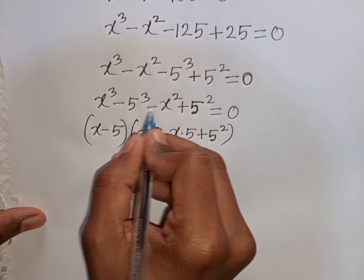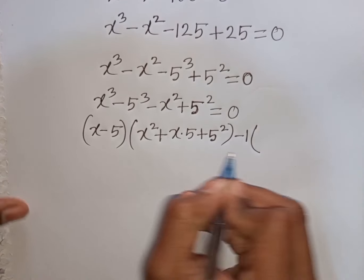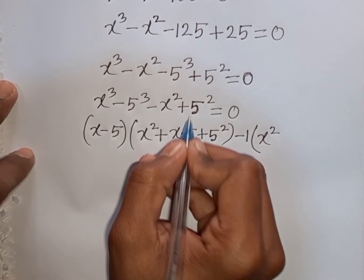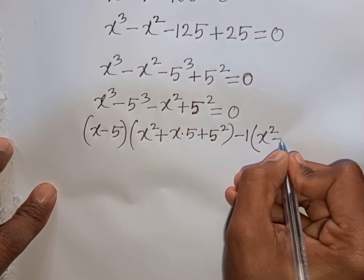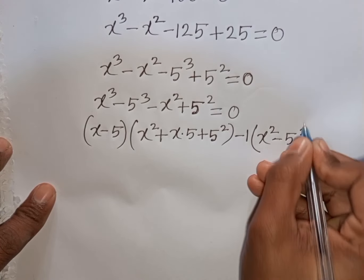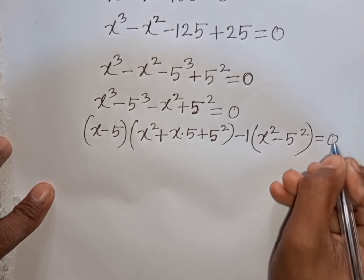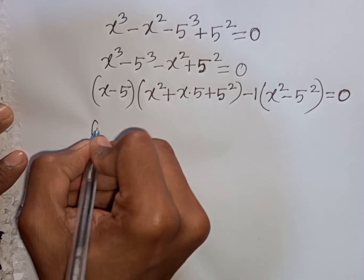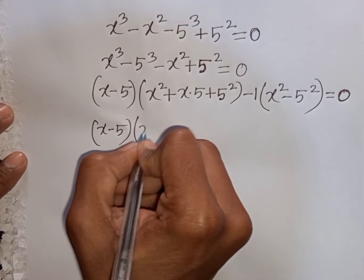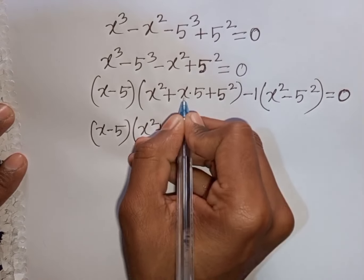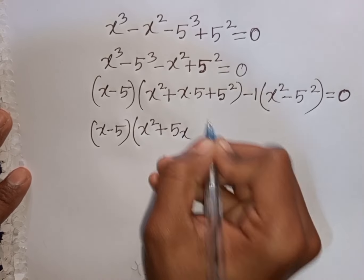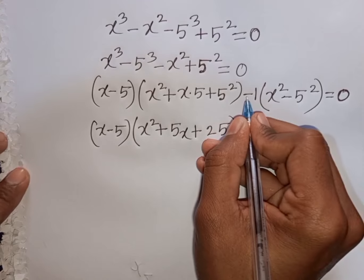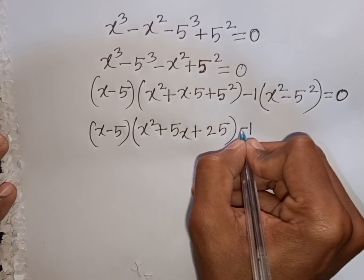Then from here I take common minus 1, so minus 1 is out of the bracket. This divided by this means x square, then plus 5 square divided by minus 1, that means it will be minus 5 square, then bracket close is equal to 0. Now we have bracket x minus 5 times x square plus 5x plus 25, then bracket close, equal to 0. Then minus 1 times the remaining bracket.